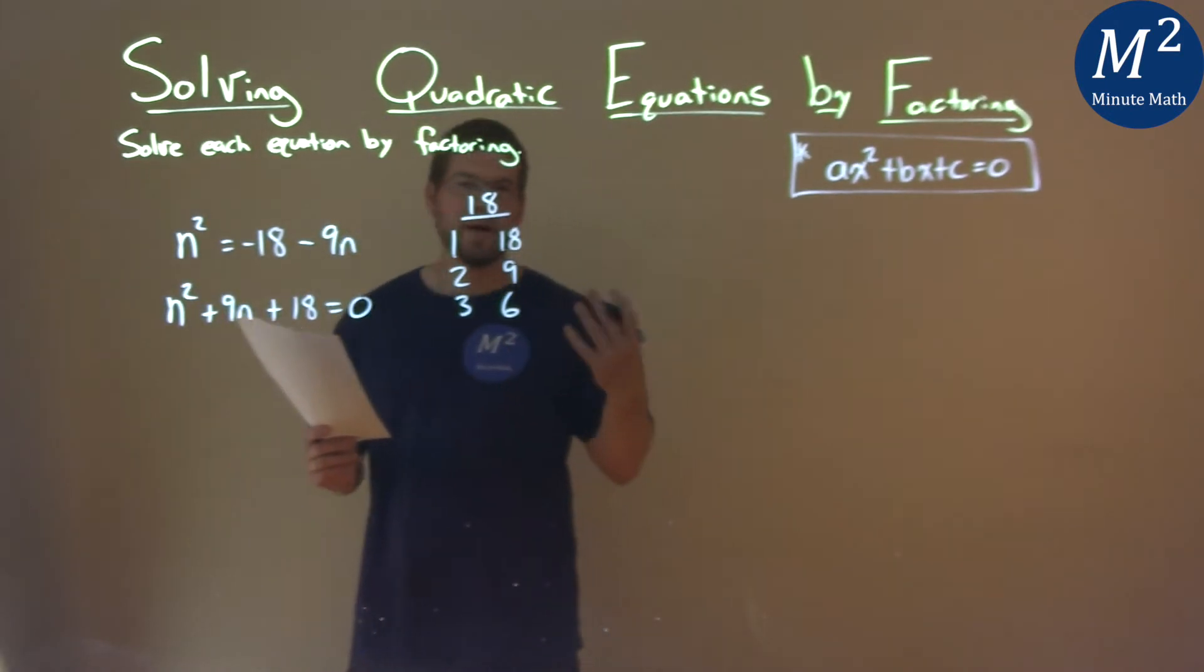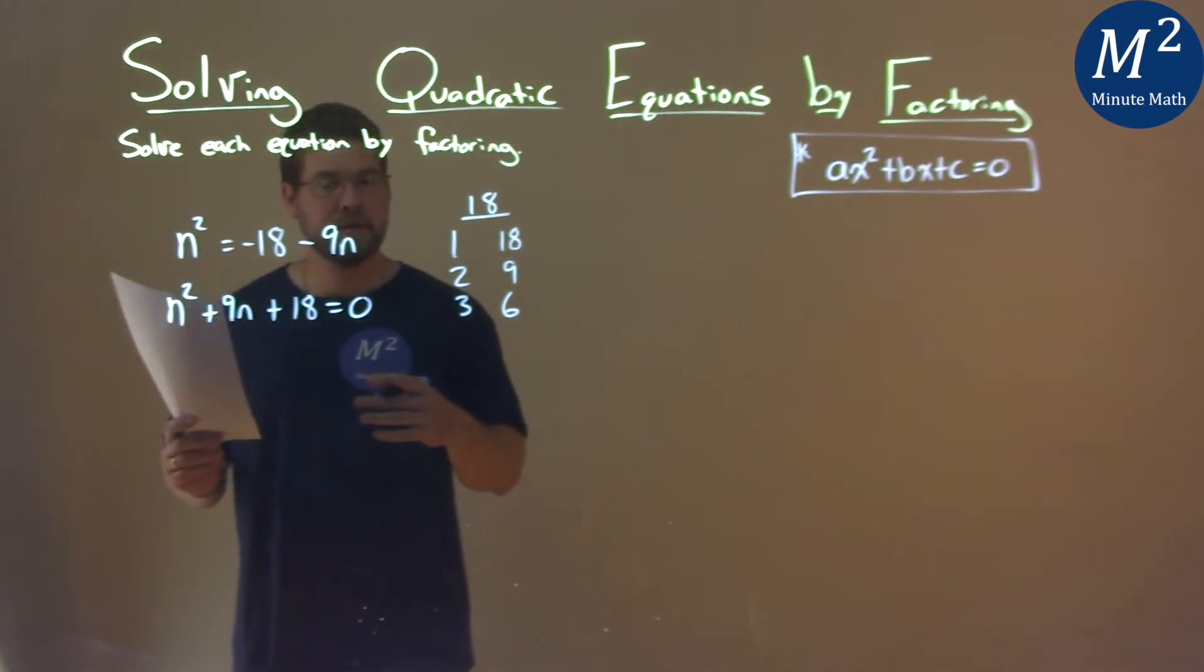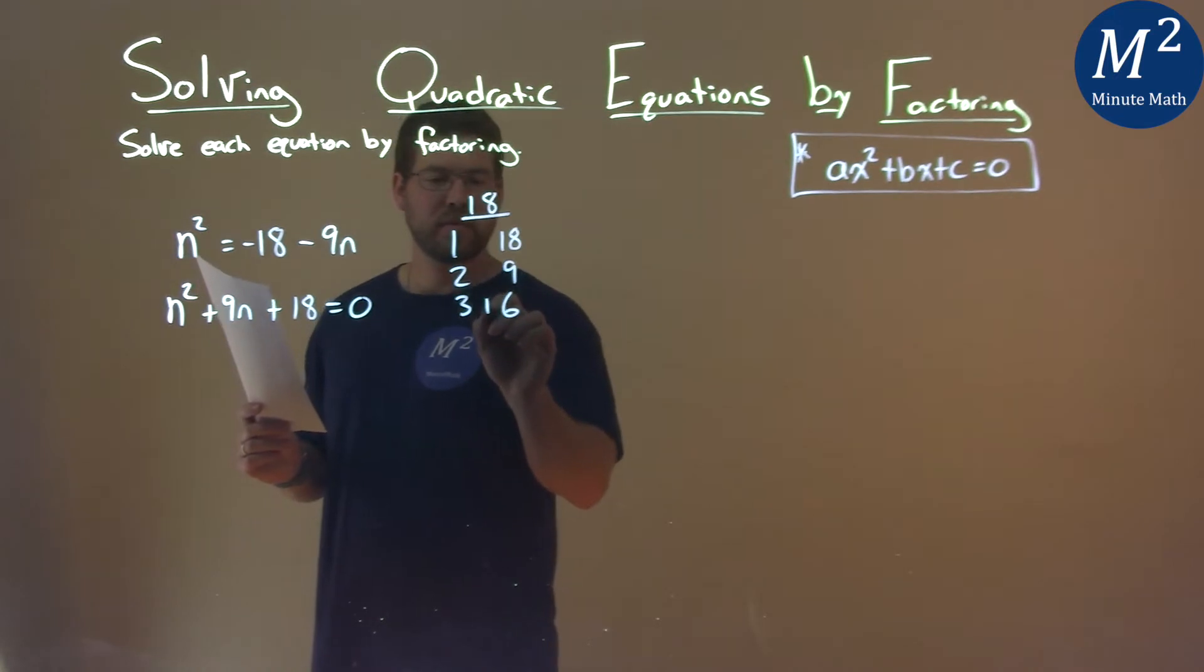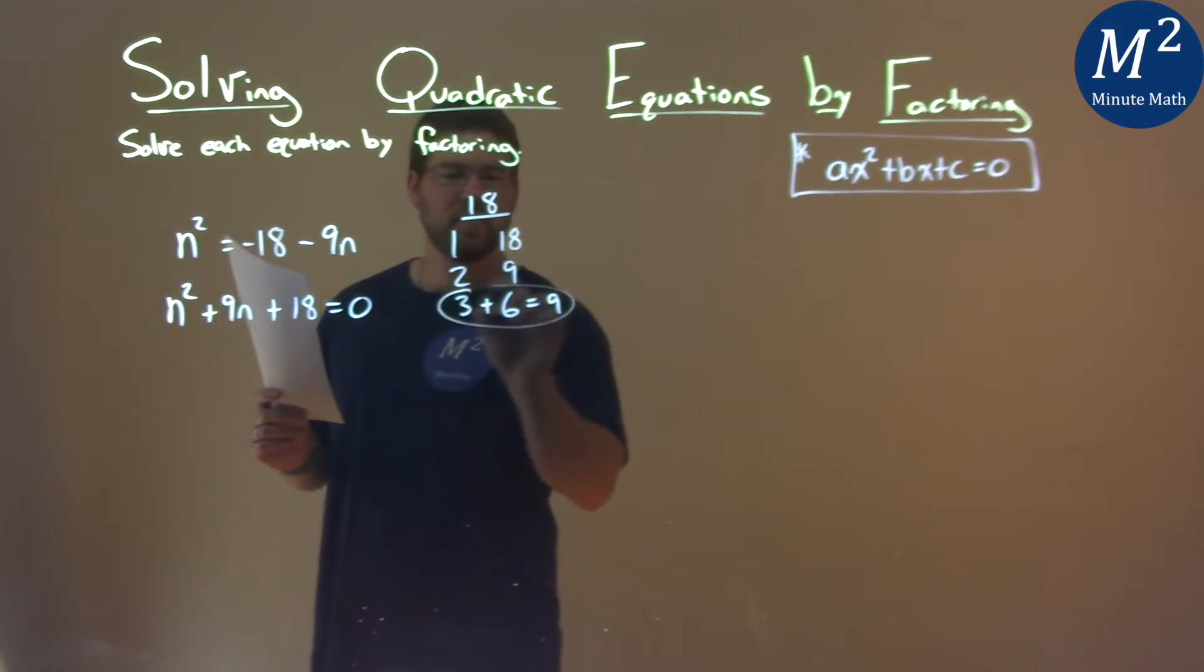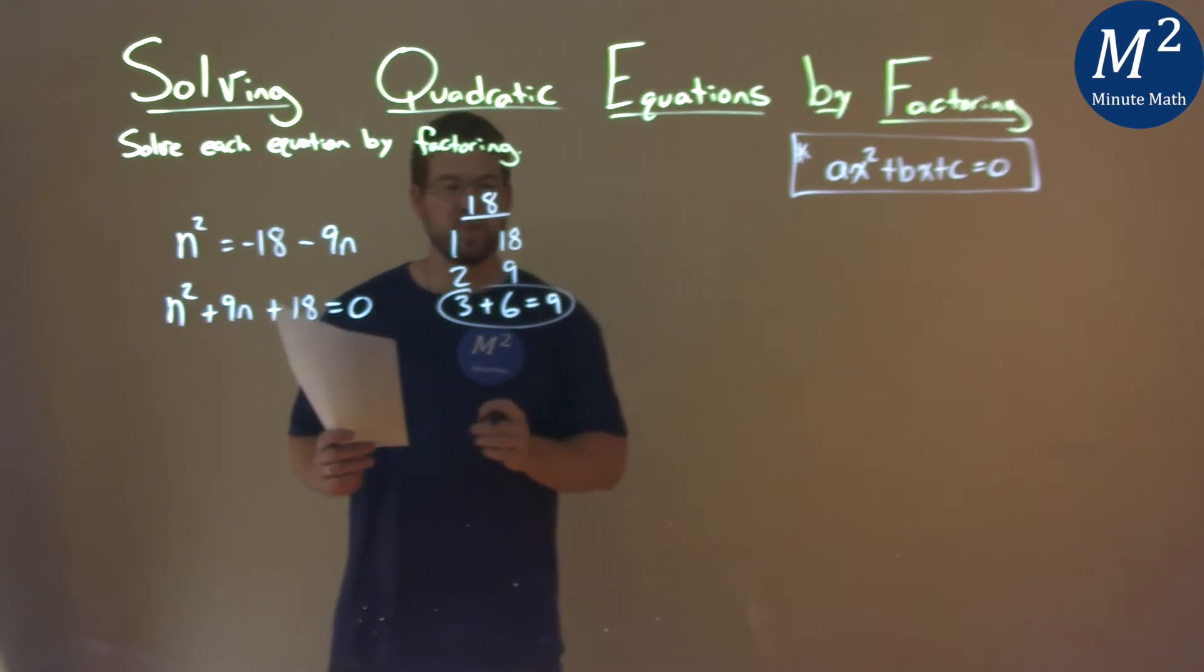So of these pairs what two add to be 9, that's actually 3 and 6. 3 plus 6 is equal to 9. So this is the pair that I'm looking for, the 3 and 6.